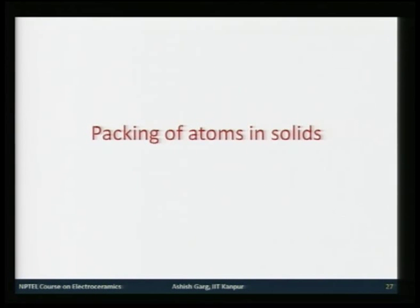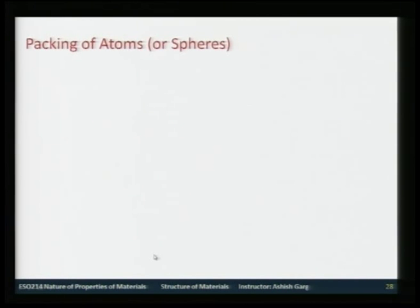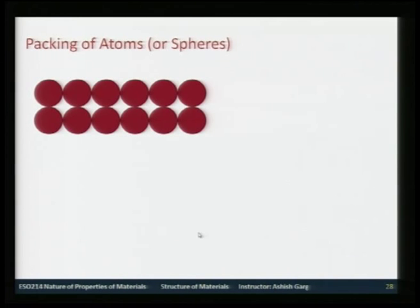Last time we discussed some fundamentals of structures and bonding. At the end of the lecture, we were reviewing the packing of atoms in materials. For instance, considering atoms as hard spheres, in the simple cubic structure the second layer of atoms goes right on top of the first layer.